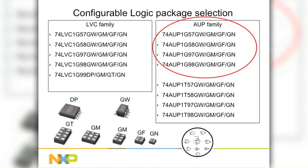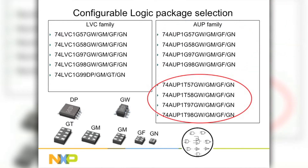Our AUP is our advanced ultra-low power logic function and is ideal for portable handheld battery operation. We also offer the part with translation built in so that all of the functions can perform a level shifting operation. Those parts are designated by the 1T in the part number.